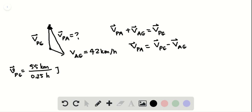This gives us VPG. In vector form, since this vector is in the j direction, VPG equals 220 kilometers per hour j-hat.